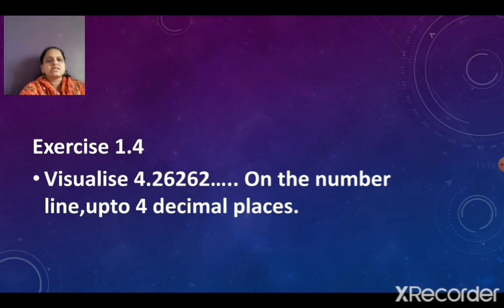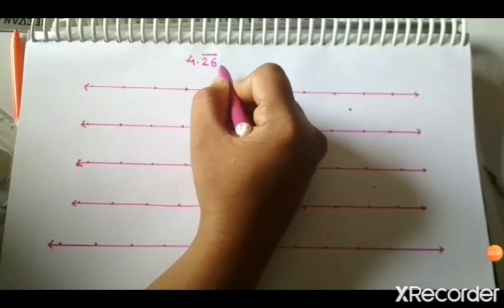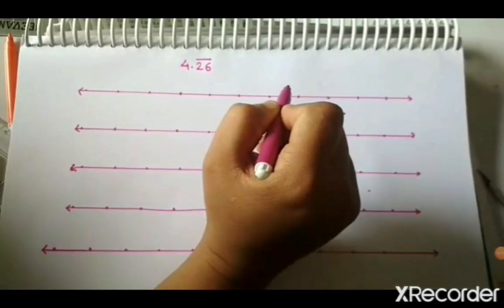Exercise 1.4, our next sum is 4.26 bar, or in decimal we can write it as 4.26262 and so on. On a number line up to 4 decimal places. So we have to represent only till 4 decimal places, meaning we have to represent 4.2626 on a number line. The question is 4.26 bar — this number is a recurring number.